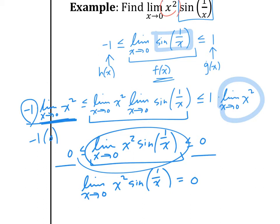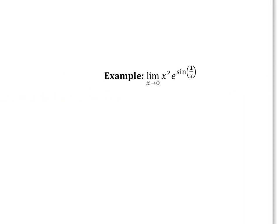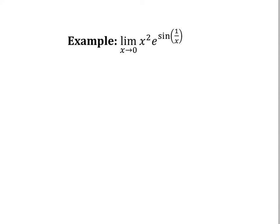Let's try another one: the limit as x goes to 0 of x squared times e to the sine of 1 over x. Ask yourself which function is bounded. Is x squared bounded? No. Is e to the x bounded? No, it goes up forever. Is the sine function bounded? Yes. 1 over x is unbounded, so we have no choice but to choose sine of 1 over x as our starting function.